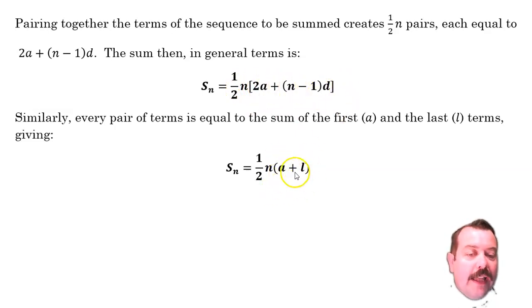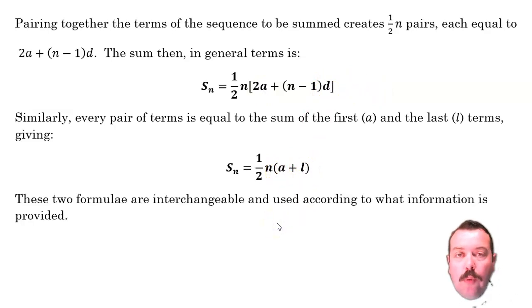We could replace that a and the l there with T1 and TN, the first and the last term or the nth term. So I have two formulas now that I could use, depending on whether I have the first term and the common difference, or whether I have the first term and the last or nth term. We can use either of them depending on what information is available.